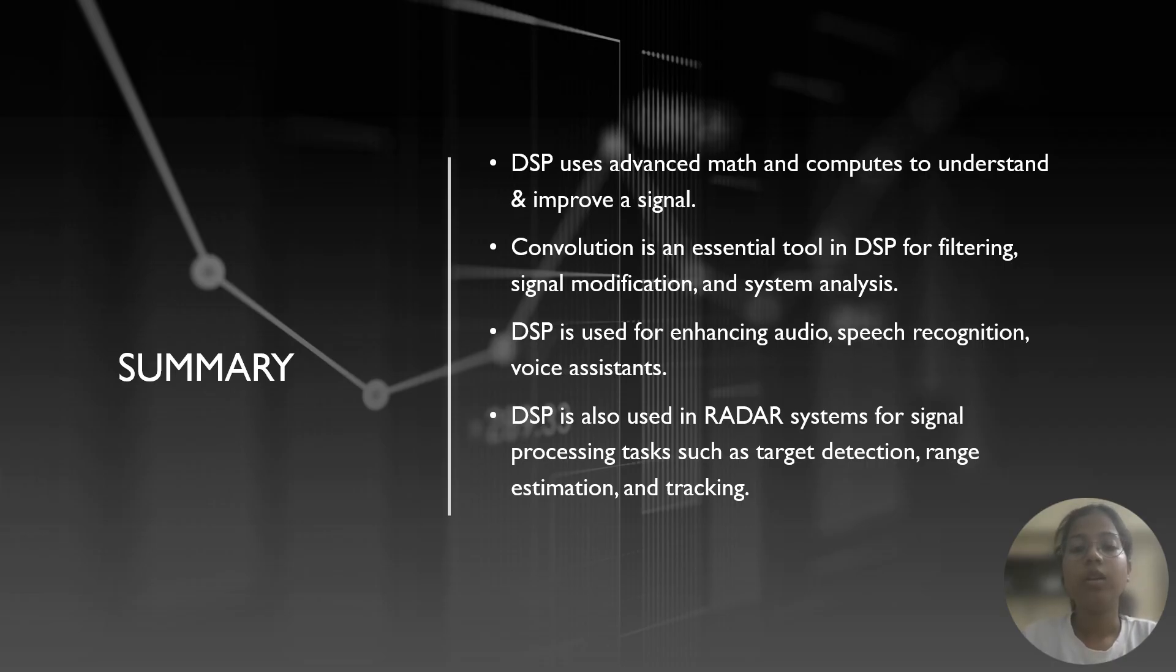Wrapping up the presentation, we have discussed about DSP, which uses advanced math and computers to understand and improve a signal. Convolution is a very essential tool for DSP for filtering, signal modification, and signal analysis and processing. DSP is used for enhancing audio, speech recognition and voice assistance. DSP is also used in radar systems for signal processing tasks such as target detection, range estimation and tracking.